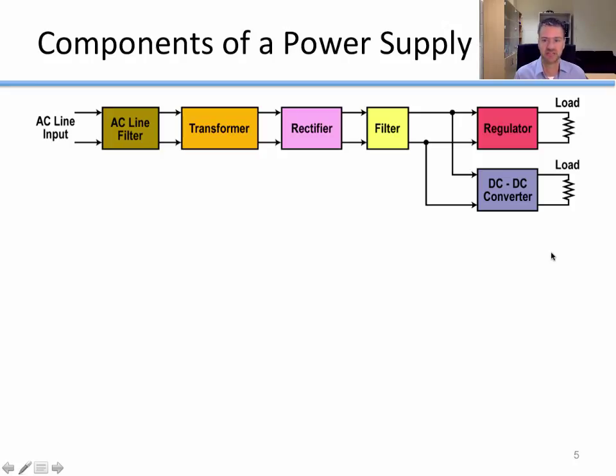What are the components of a typical AC to DC power supply? First we have an AC line filter, then a transformer, a rectifier, another filter, and finally a regulator or a DC to DC converter. Most commonly you'll see a regulator come next, and that's what we're going to use. Let's look through each of these pieces one by one.